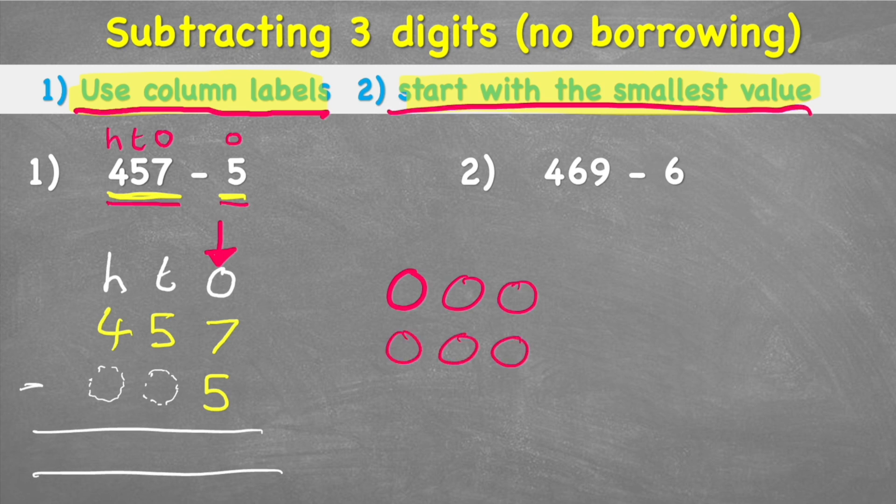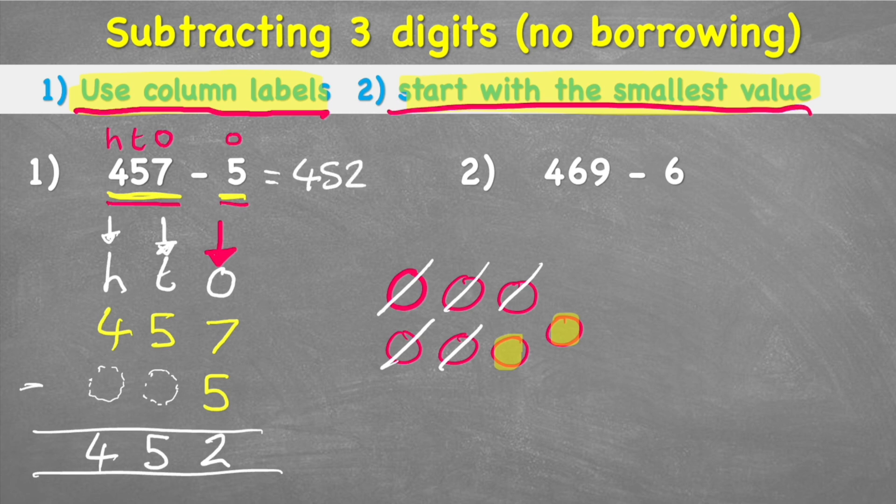How many does that leave me? Well, I have one, two, so my answer is two. And then my second question would be now here in the tens column, and I have five subtract zero, and five subtract zero is still five. And my last question in the hundreds column says four subtract zero, and my answer would therefore be four. So my answer to 457 subtract five equals 452. Awesome.